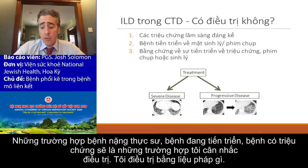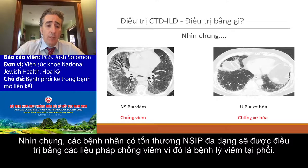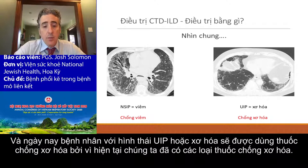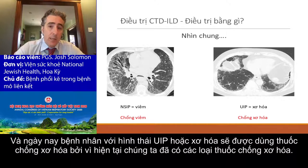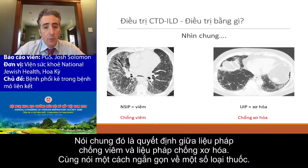In terms of what to treat with: patients with the NSIP variety will get treated with anti-inflammatory therapies, since that's an inflammatory lung disease. Patients with the UIP or fibrotic subtype will get an anti-fibrotic, because now we have anti-fibrotics to choose from. In general, it's a decision between anti-inflammatory therapy and anti-fibrotic therapy.